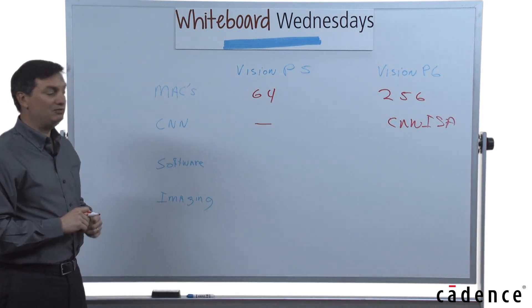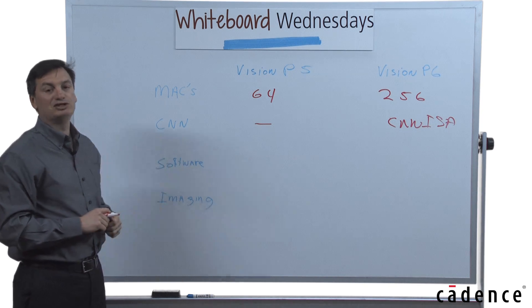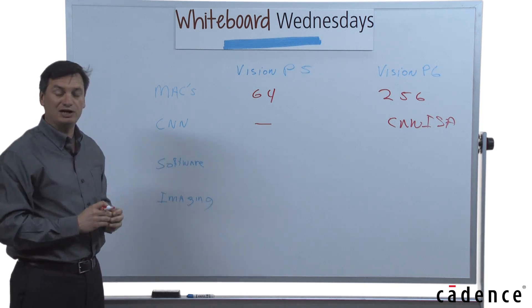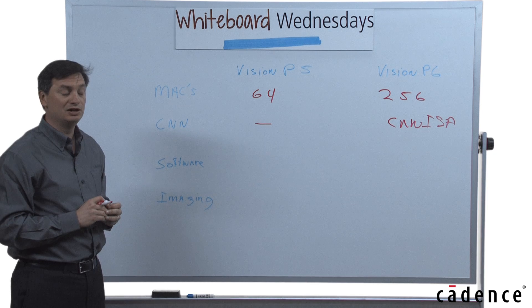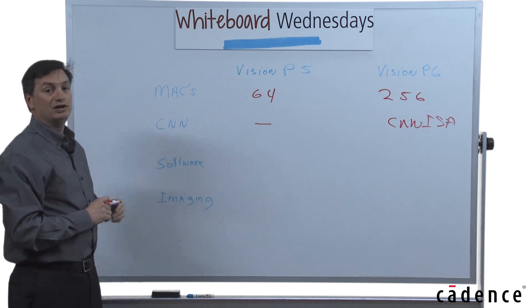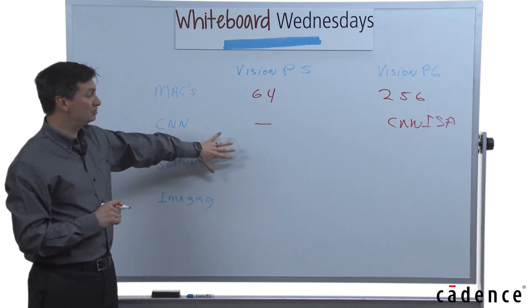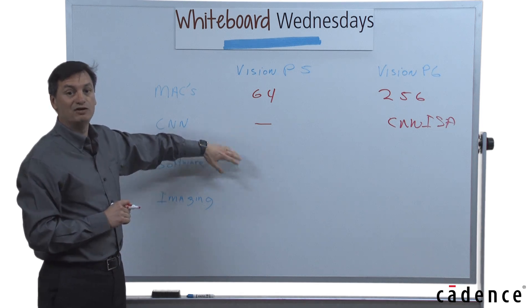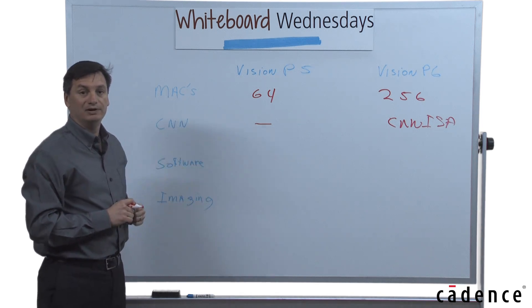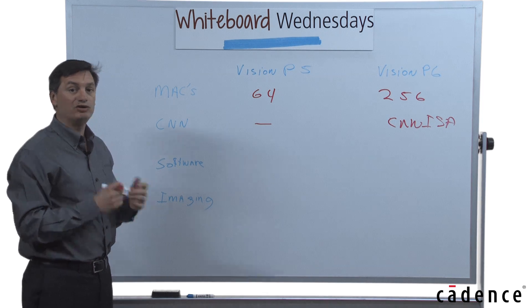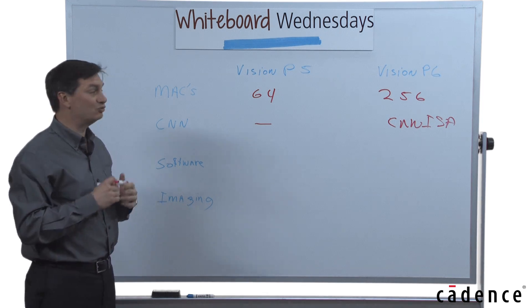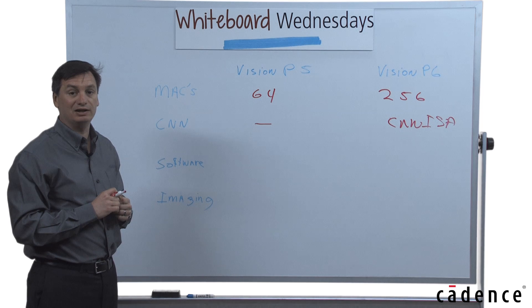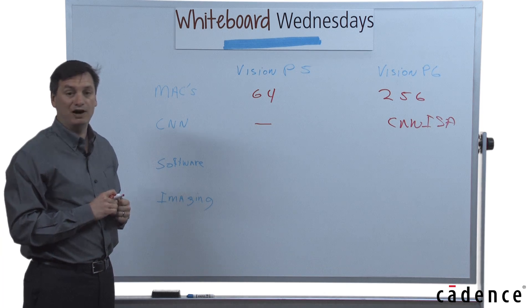In terms of software compatibility, we had a tremendous amount of software for the Vision P5 from ourselves, from third parties, and from our customers. That's all preserved because the basic ISA instruction set for the Vision P6 is the same as the Vision P5 with some additional instructions added. So all the software that exists today will just run on the Vision P6 directly if it was engineered for the Vision P5.